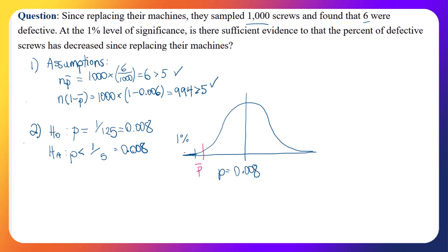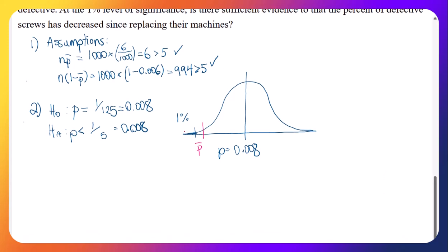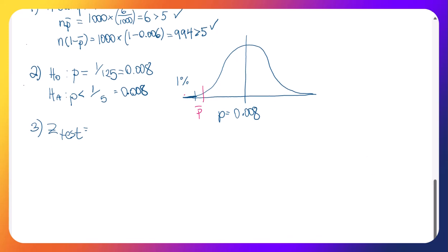Okay, so keeping going, next thing to do, let's go get our test statistic. Okay, so what we want is z-test. The formula for that is the following. We take p-bar minus p, divide by the square root of p times 1 minus p over n.